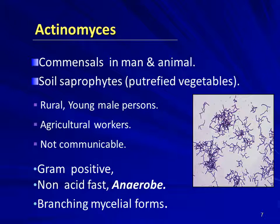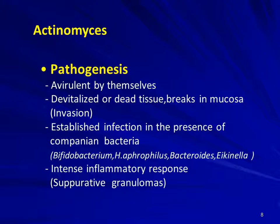Actinomyces are gram-positive, non-acid-fast anaerobes with a branching mycelial network. In pathogenesis, they are avirulent by themselves but thrive in devitalized or dead tissue. When there are breaks in mucosa, they enter the body by invasion. In the presence of companion bacteria like Bifidobacterium, Haemophilus, Bacteroides, and other Actinomyces species, they behave as more virulent strains.